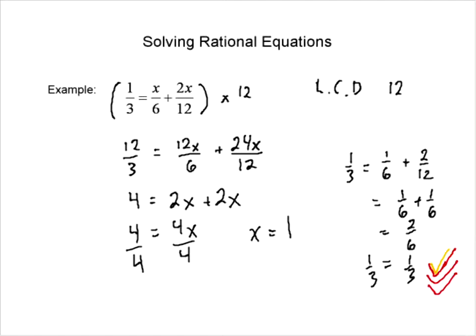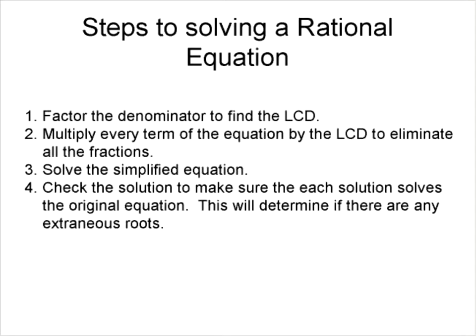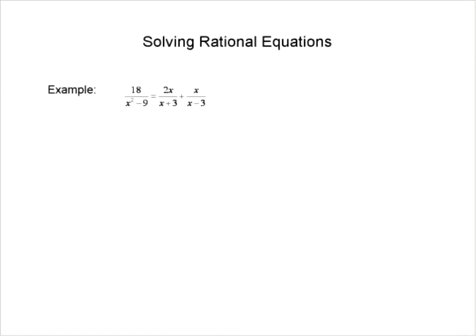That was a very simple example, but we'll use those same principles going forward. The steps are: factor the denominators to find the lowest common denominator; multiply every term of the equation by the LCD to eliminate all the fractions; solve the simplified equation; and check the solution. Checking determines what are called extraneous roots — 'extraneous' meaning extra roots that appear in the equation but don't actually work.